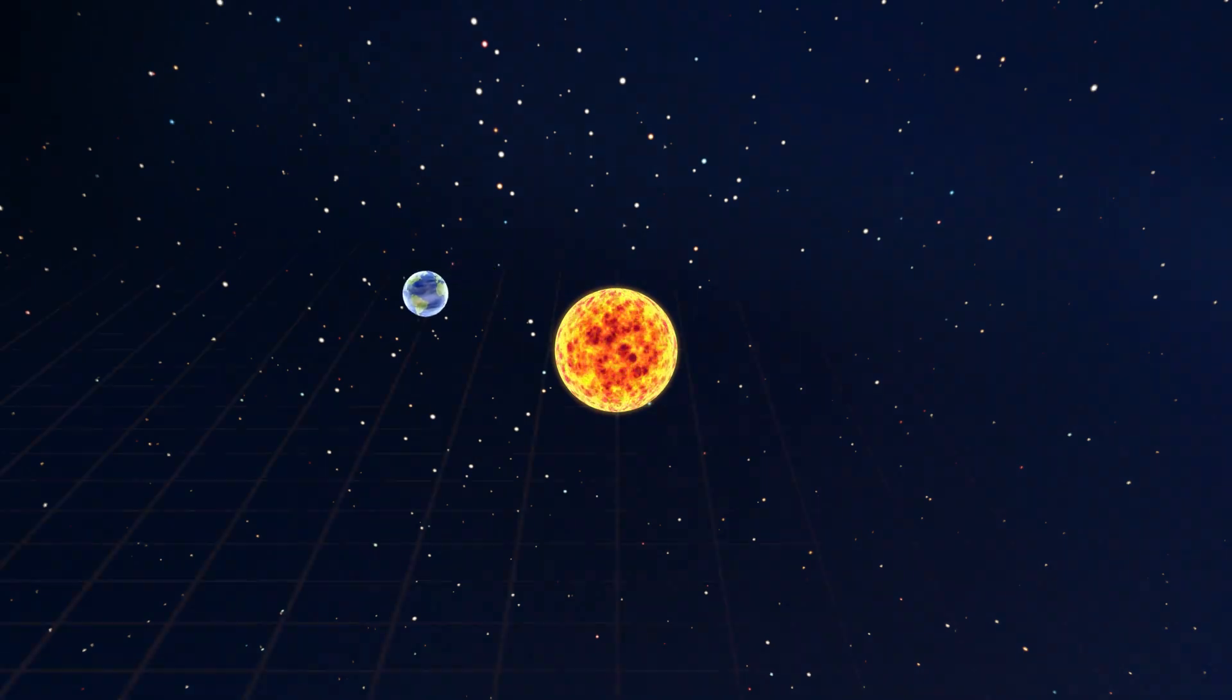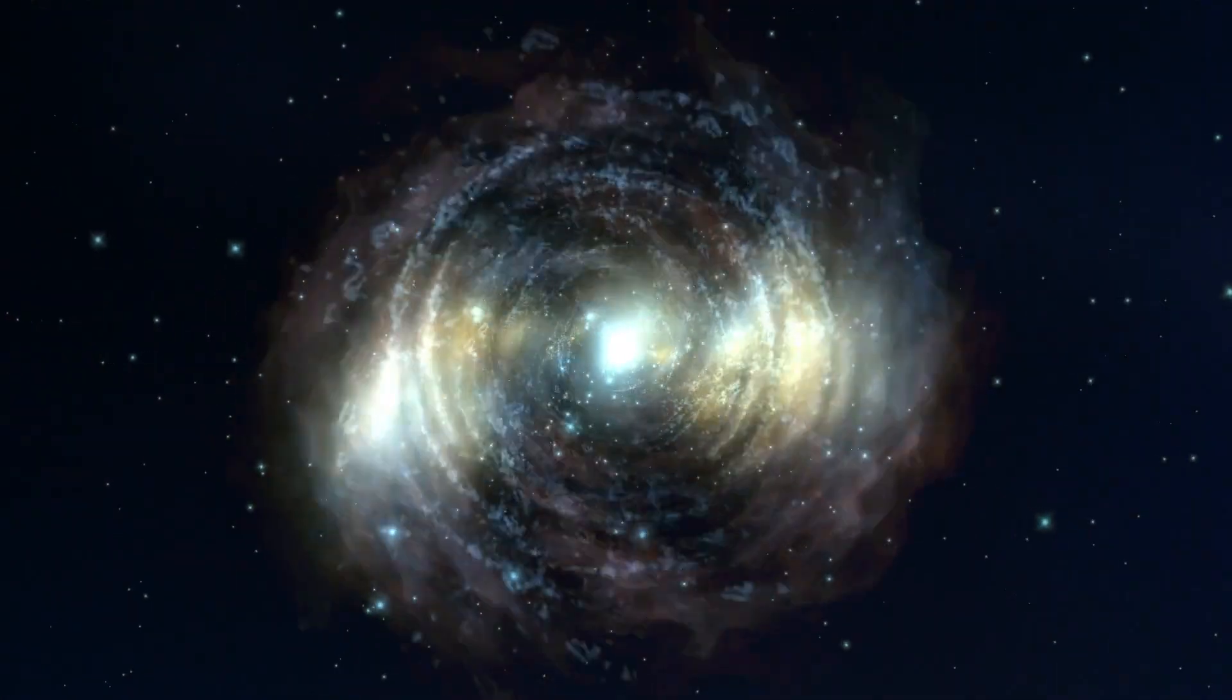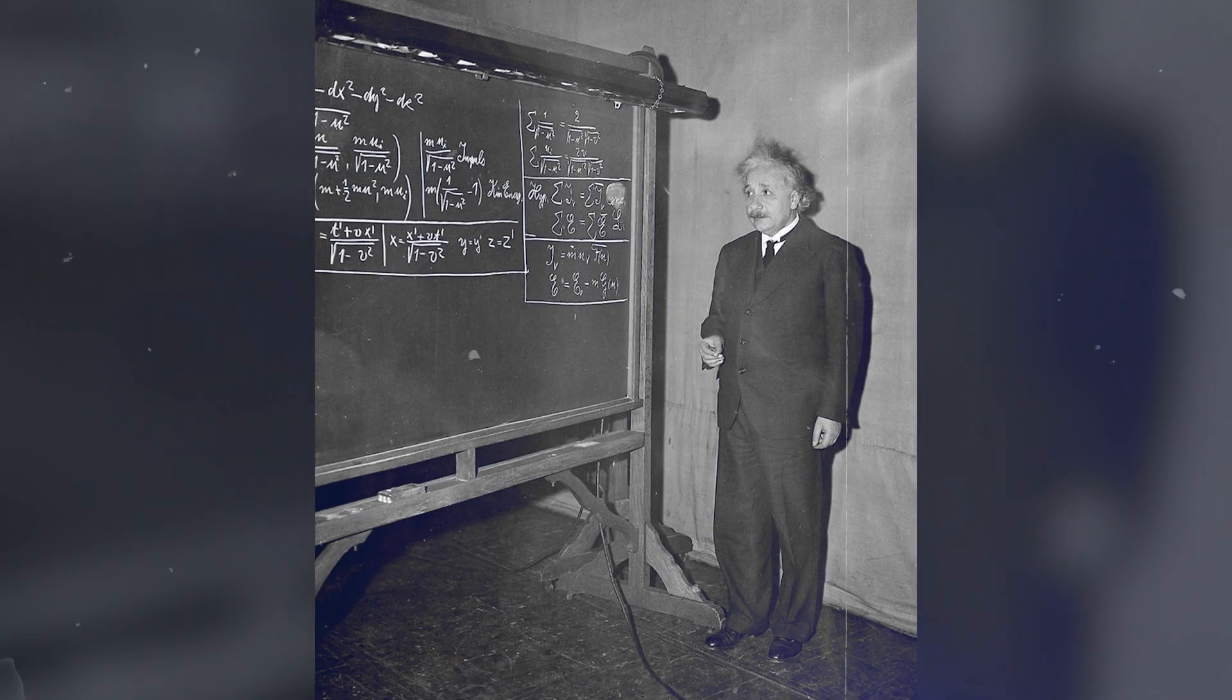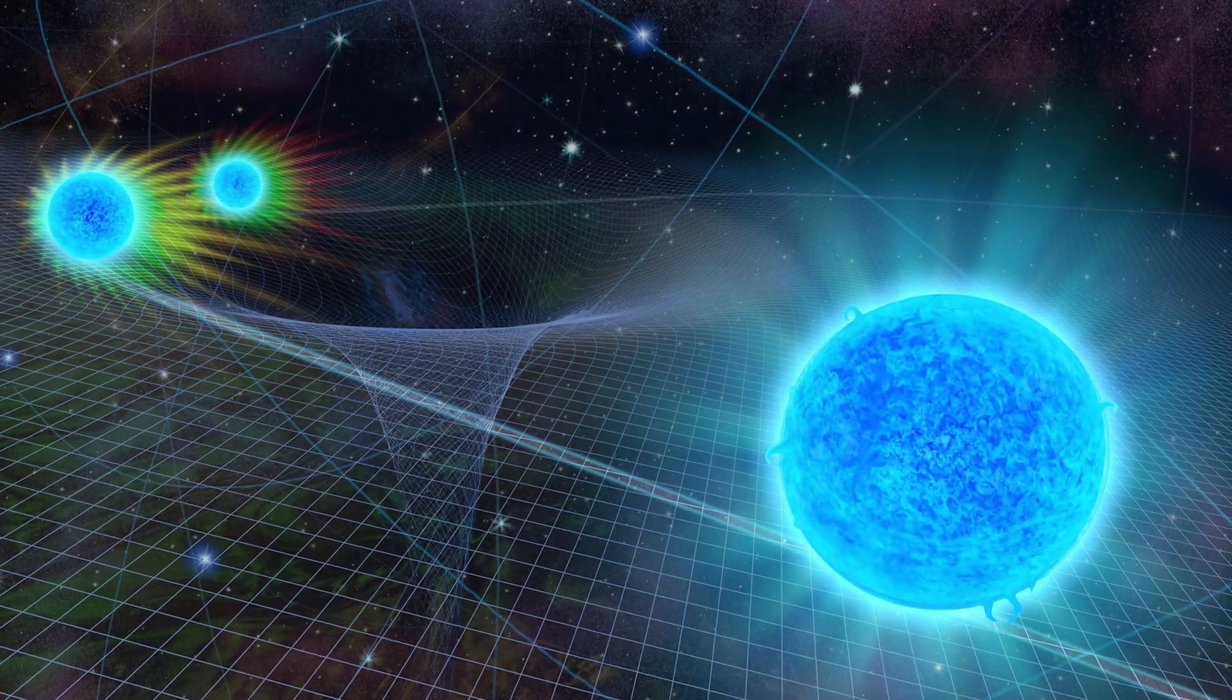This curvature dictates the paths that objects, including light, follow through space. While the equations are intricate, their implications are profound, offering insights into everything from black holes to the universe's expansion.